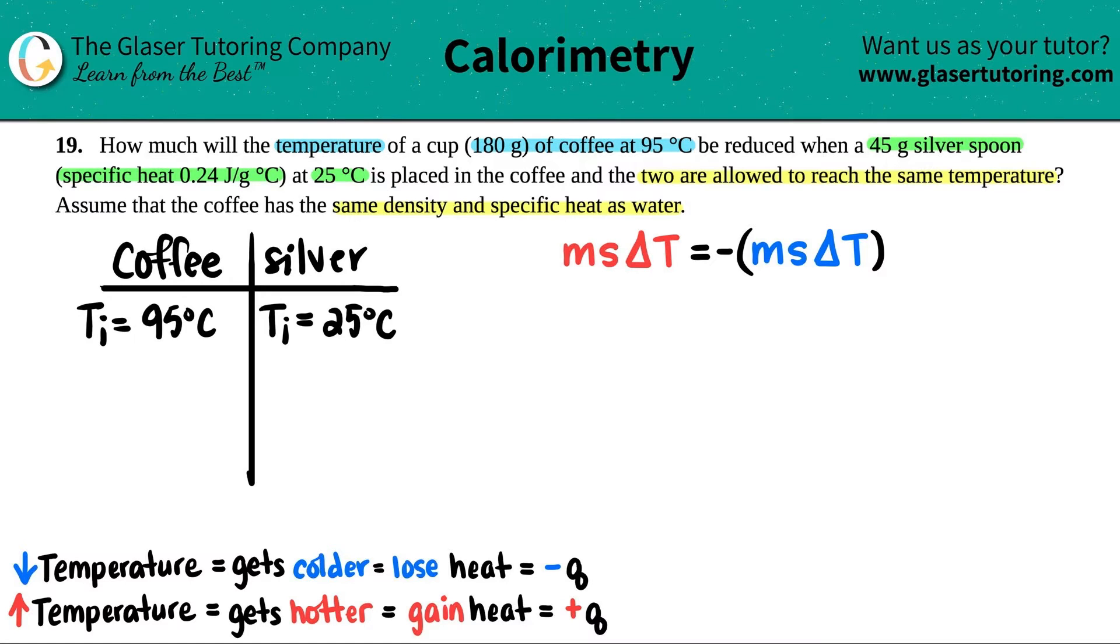So what I'm going to do is I'm just going to read it again closely. They're telling us that the coffee was initially at 95 degrees Celsius. So my Ti for the coffee was 95 degrees Celsius, and the silver spoon was at 25 degrees Celsius. So my Ti for the silver is 25 degrees Celsius. Now, they didn't tell me what the final temperature was, but they did say that the two were allowed to reach the same temperature.